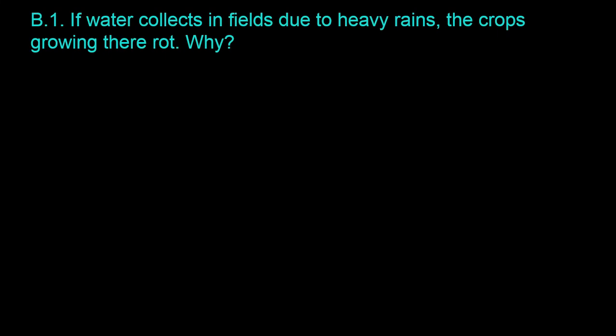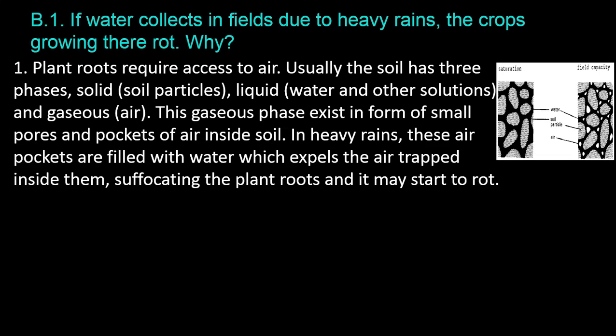Question B.1: If water collects in fields due to heavy rains, the crops growing there rot. Why? Plant roots require access to air. Usually the soil has three phases: solid (soil particles), liquid (water and other solutions), and gaseous (air). This gaseous phase exists in the form of small pores and pockets of air inside the soil. In heavy rains, these air pockets are filled with water, which expels the air trapped inside them, suffocating the plant roots, and they may start to rot.